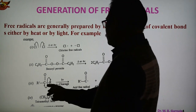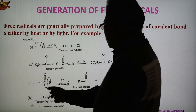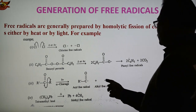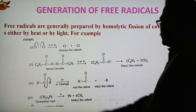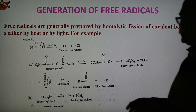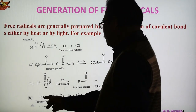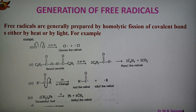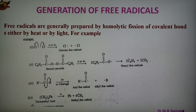The third example is a general example: that is a ketone. This C–O bond undergoes breaking, and after breaking this carbon gets one electron and this alkyl gets one electron. So this is the acyl free radical and alkyl free radicals are formed. The fourth example is tetramethyl lead, and after heating we get methyl free radicals and Pb is the metal. So after homolytic fission of the covalent bond we get different types of free radicals: chlorine free radicals, phenyl free radicals, alkyl free radicals, or methyl free radicals.